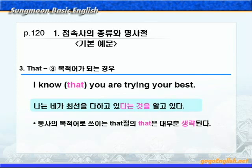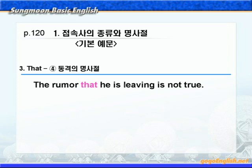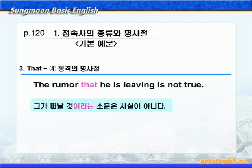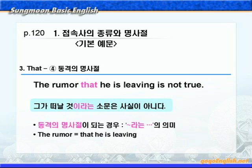다음 4번, 이번에는 that절이 동격의 명사절을 유도하는 경우를 보겠습니다. 'The rumor that he is leaving is not true.' 그가 떠날 것이라는 소문은 사실이 아니다. he is leaving은 진행의 의미가 아니라, leave 같은 왕래발착동사가 현재진행으로 쓰이면 가까운 미래의 의미가 있다 그랬죠. The rumor that he is leaving에서 종속접속사 that 이하는 The rumor와 동격의 명사절로 되어 있죠. that이 동격의 명사절이 되는 경우는 '~라는 ~' 이런 의미니까 그가 떠날 것이라는 소문, The rumor = that he is leaving 이런 관계가 되는 것입니다.